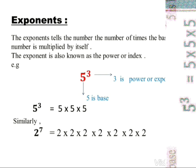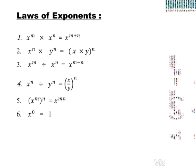Now the laws of exponents. The first law is: x to the power m multiplied by x to the power n equals x to the power m plus n. When the bases are the same and the operation is multiplication, then the powers are added. The second law is: x to the power n multiplied by y to the power n equals (xy) to the power n, because the powers are the same.